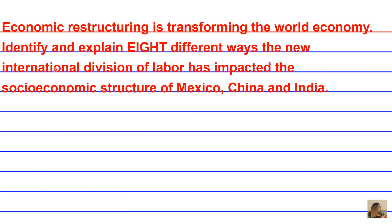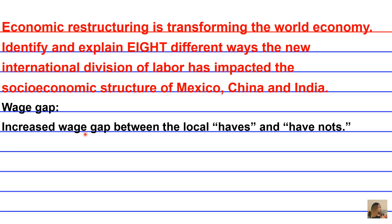A third impact of the new International Division of Labor on the socioeconomic structure of developing nations like Mexico, China, and India is in terms of the wage gap. There are increased wage gaps between the local haves and have-nots when transnational and multinational corporations relocate to these regions. Not everyone gets employed — those who do become the haves, and those who hold local menial jobs or remain unemployed become the have-nots.